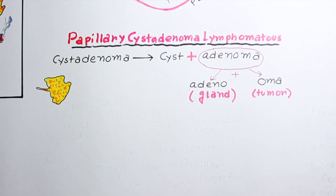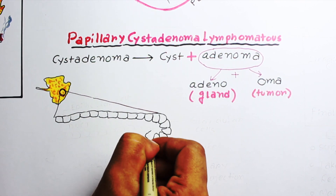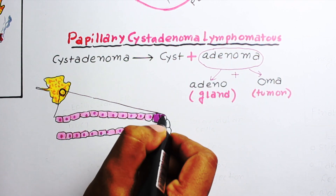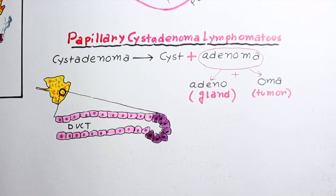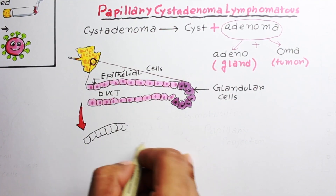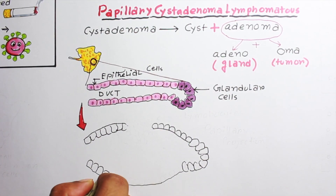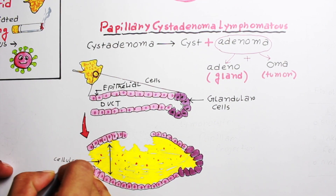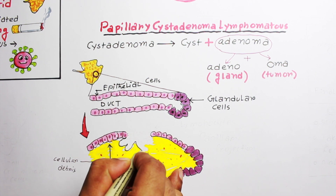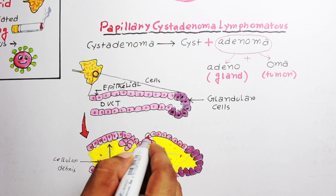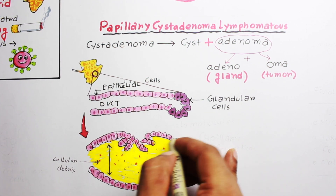Consider a small part of the parotid gland. As we know, the parotid gland is made up of glandular cells and small ducts lined by epithelial cells. In the case of cyst adenoma, the ducts grow in size and fill up with fluid and cellular debris, forming a large cyst.